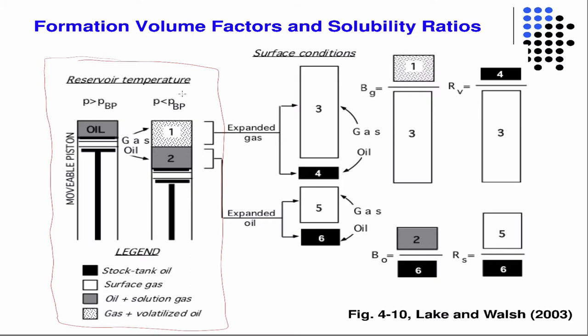The bubble point P_BP is the pressure at which gas comes out of solution. Any time we go to the surface, we're going to go above the bubble point. If we take the gas that came out of solution plus the volatilized oil to the surface, the gas will expand and oil will condensate out. But in the black oil model, we said there was very little volatilized oil in the gaseous phase to begin with, so we're going to say that's negligible — the oil that would have condensated out is so little we won't consider it.